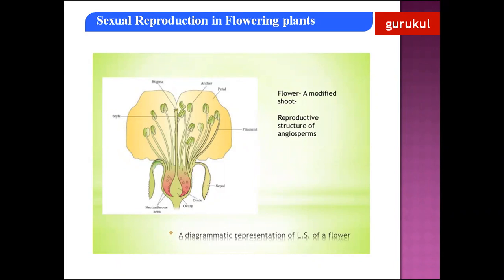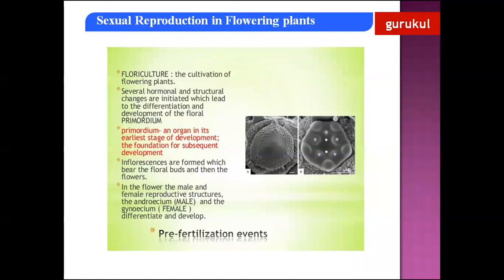Reproduction in flowering plants is said to be sexual, and the organs involved are the flowers. A flower is a modified shoot meant for sexual reproduction. The cultivation of flowering plants is called floriculture. Several hormones and structural changes in the plant body lead to the differentiation of a vegetative bud into the floral bud, called the floral primordium. A primordium is any organ in its early stage of development. A group of flowers is generally called an inflorescence.